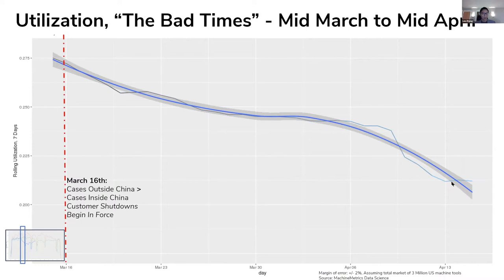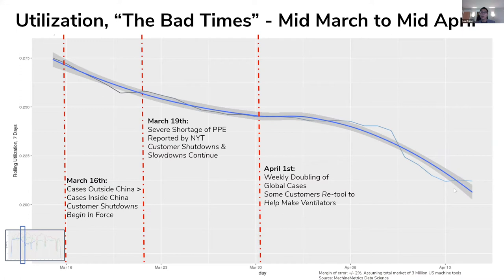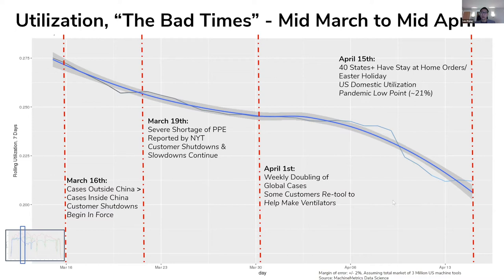Now we get to the bad times. On March 16th, cases outside of China outnumbered cases inside China, and shutdowns really started to begin in force. On March 19th, a severe shortage of PPE was reported and our customers continued to shut down because they couldn't operate without protective equipment. On April 1st — really the height of the pandemic — there was a weekly doubling of global cases. Some customers retooled to help make ventilators. By April 15th, 40 states had declared stay-at-home orders, and paired with the Easter holiday, US domestic utilization hit a low point of about 21%.